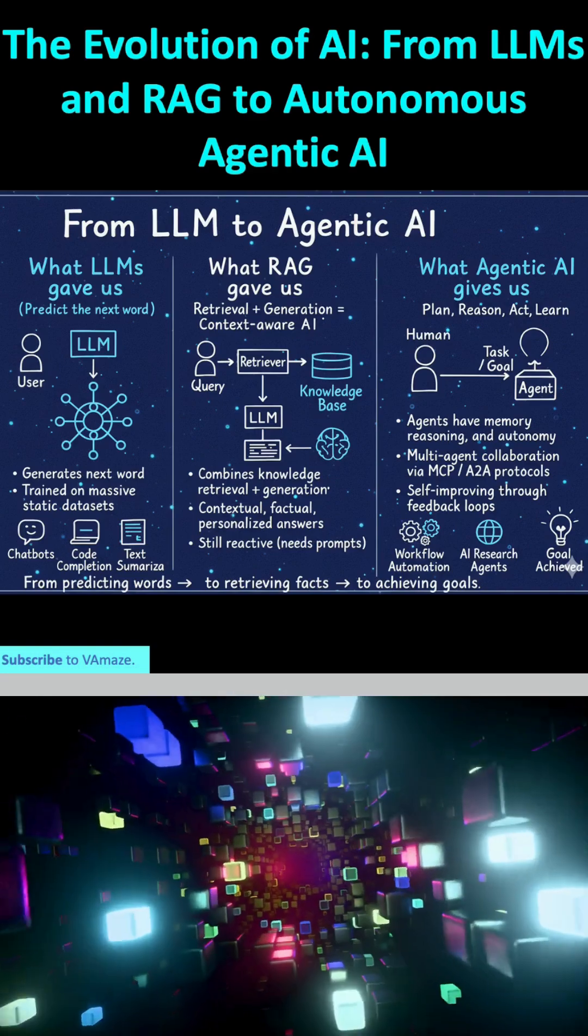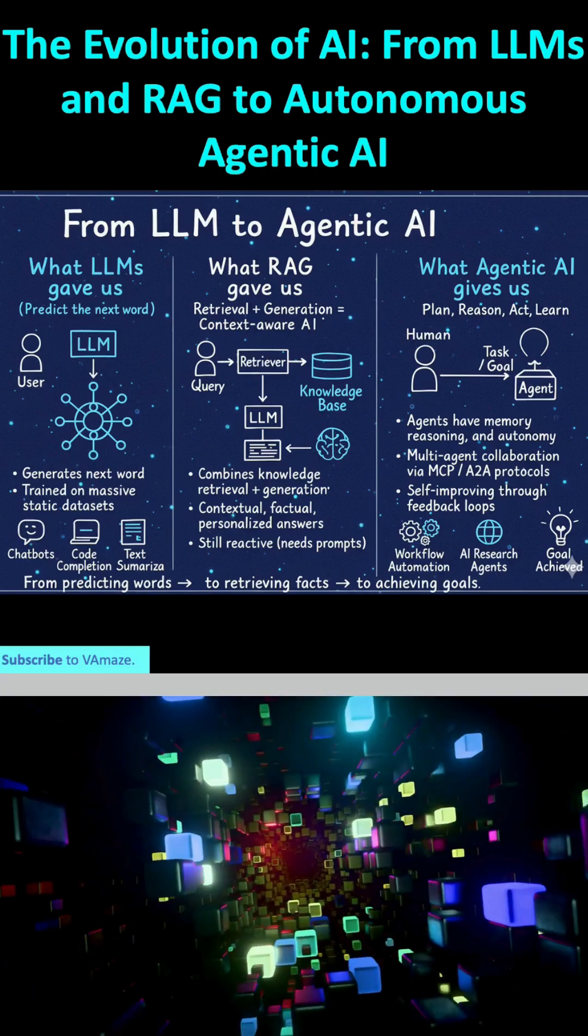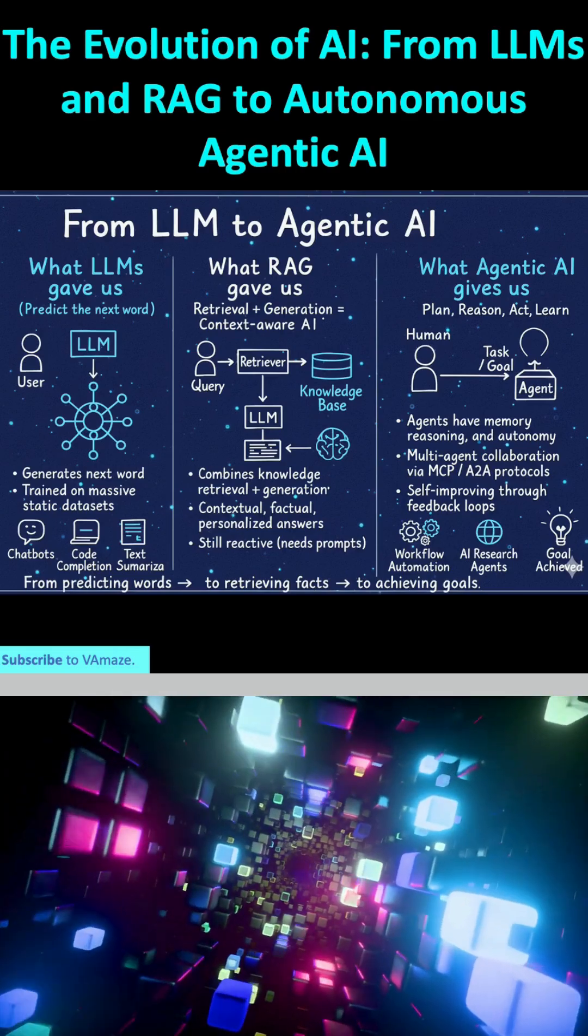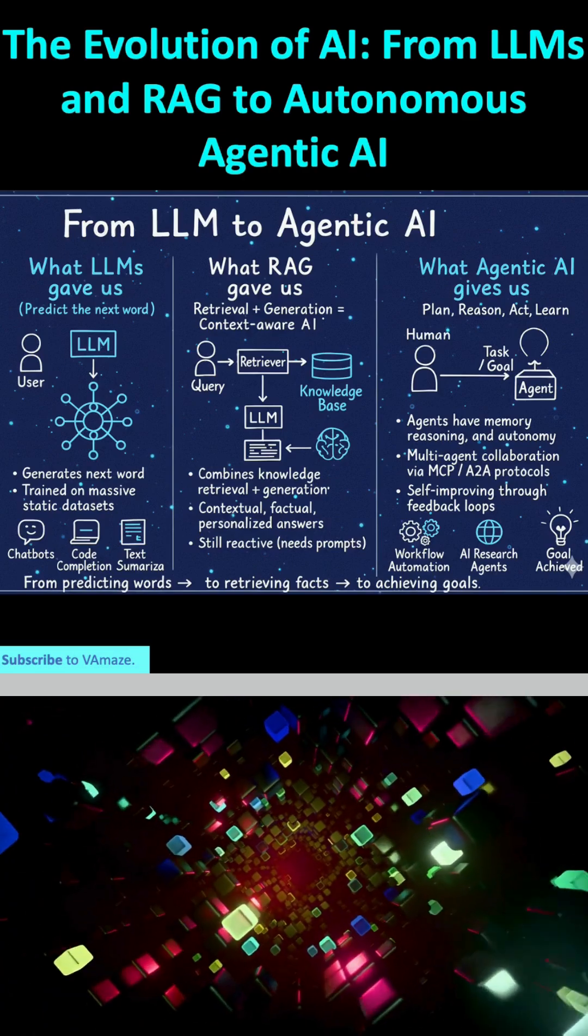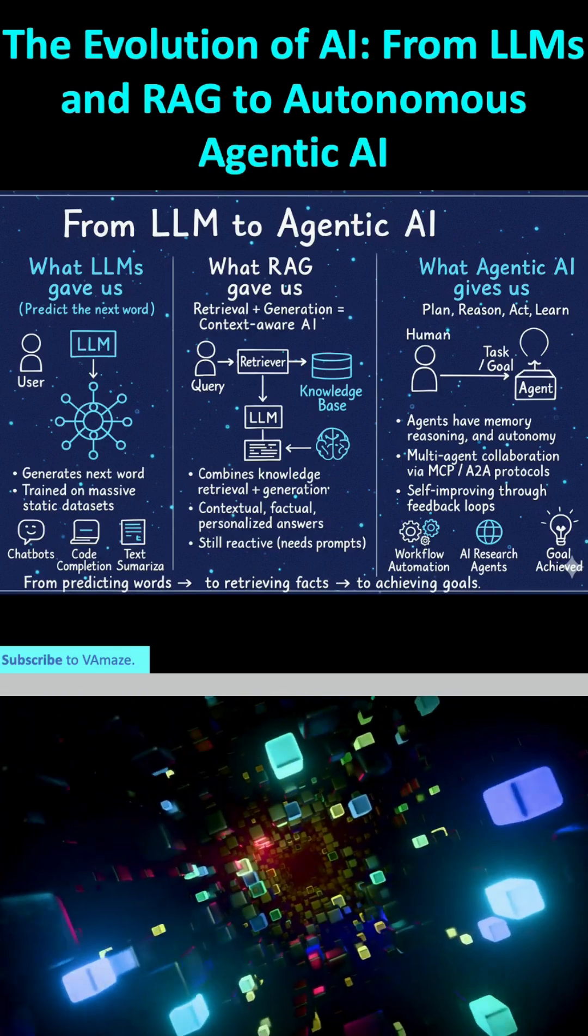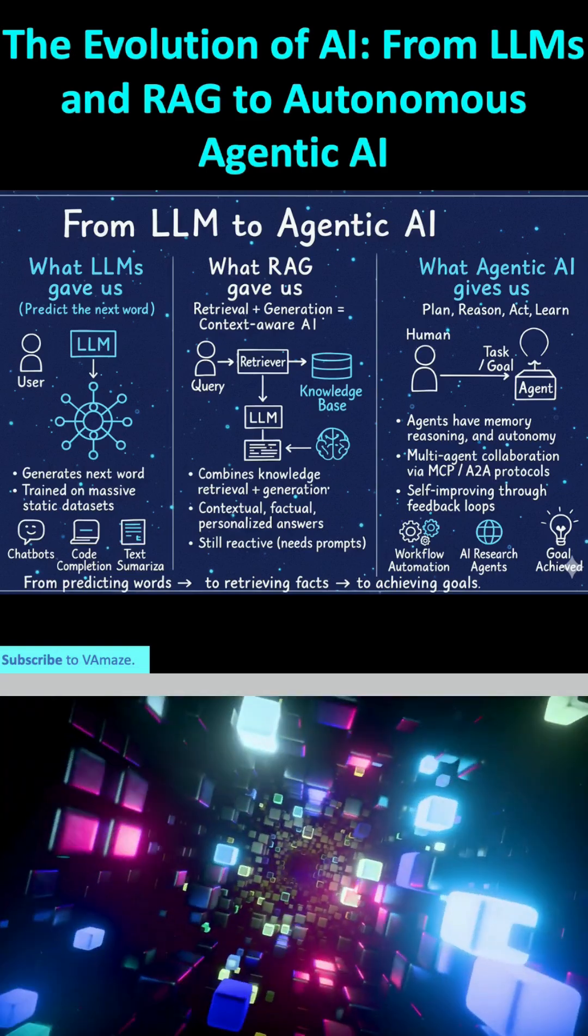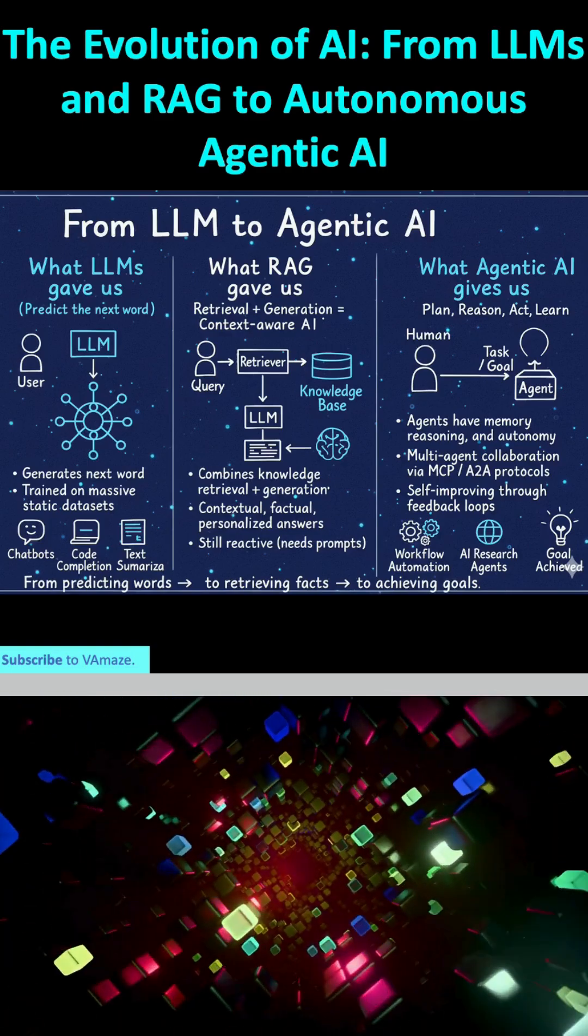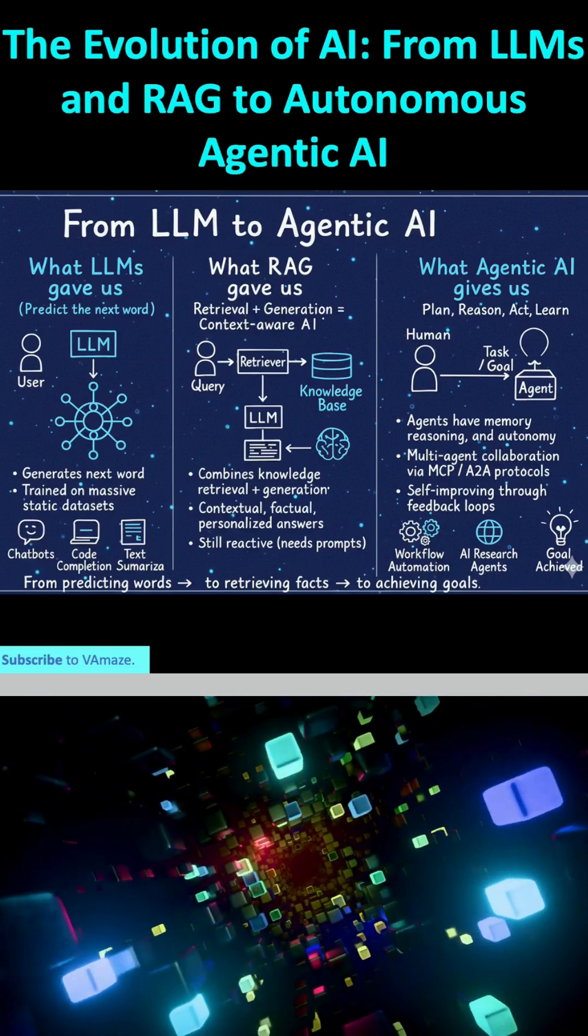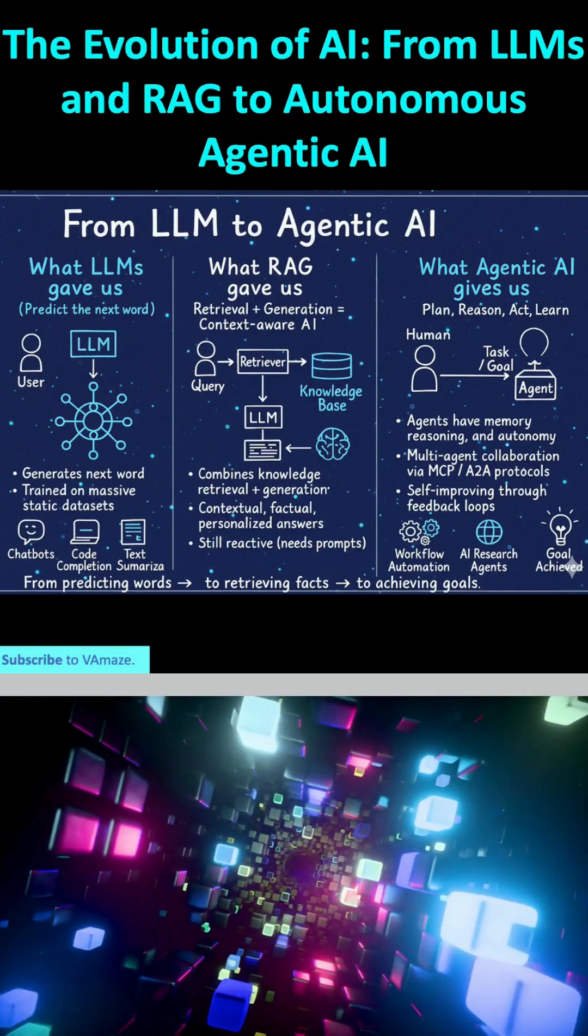Furthermore, agentic AI incorporates self-improving through feedback loops, meaning they can analyze their own performance, identify errors, and refine their strategies over time, much like a human learning from experience. The applications are transformative: from workflow automation, where agents can manage and execute business processes end-to-end, to AI research agents that can explore and synthesize new scientific knowledge, all ultimately driving towards the goal achieved. This represents a fundamental shift from predicting words to retrieving facts to now achieving complex goals.